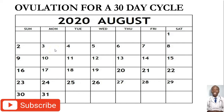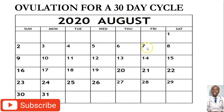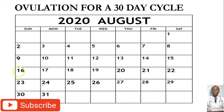Remember, you saw your periods on 3rd, 4th, and 5th. Count 14 days beginning with the first day you saw your periods. We shall say 1, 2, 3, 4, 5, 6, 7, 8, 9, 10, 11, 12, 13, 14. The 14th day, which is going to be a Sunday on the 16th, is your date of ovulation.